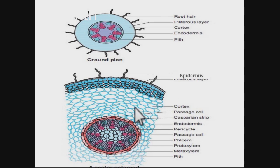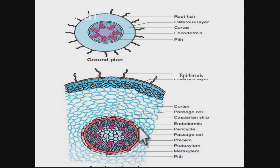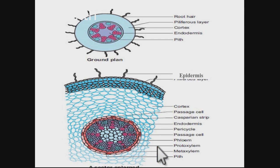This diagram shows the transverse section of monocot root. In monocot root we also have root hairs, a piliferous layer, cortex, passage cells opposite to the proto xylem, Casparian strips in the endodermis as suberin deposition, and the pericycle which is generally single layer. Likewise in dicot root, xylem and phloem show a radial arrangement, proto xylem faces the periphery, and meta xylem (the large xylem) is inside — giving an exarch condition.